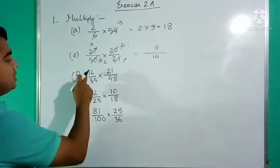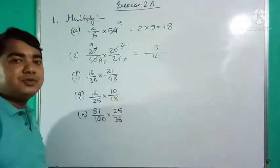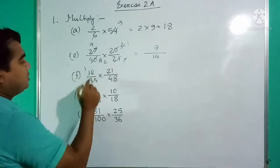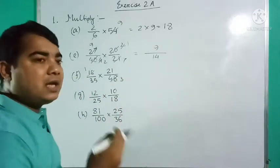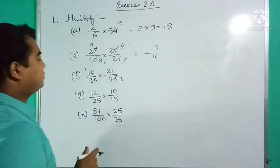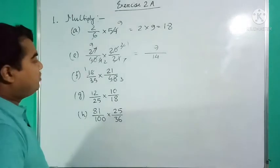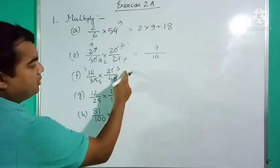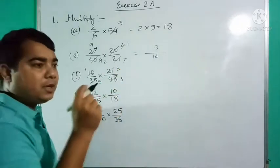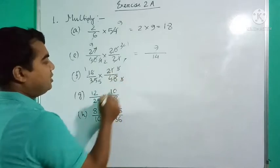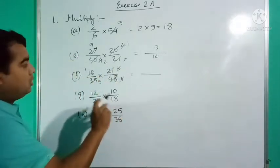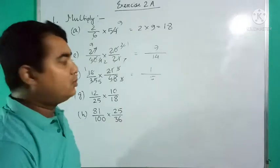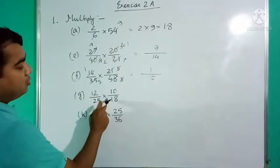Question number 1f: 16/48 × 21/35. For 16 and 48: 16 goes into 48 three times, so cancel to get 1 and 3. For 21 and 35: both divisible by 7, giving 3 and 5. Now observe numerator and denominator — cancel 3 and 3, leaving 1. No more cancellation. Answer is 1/5.